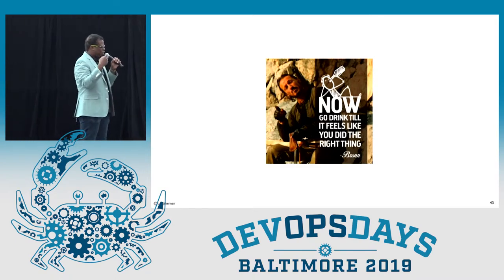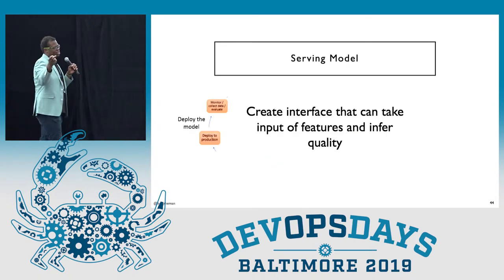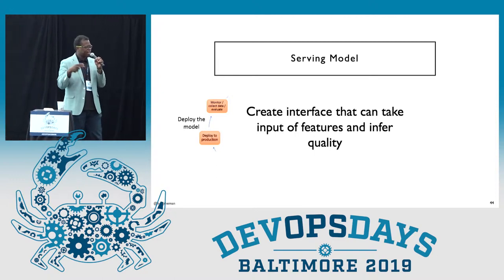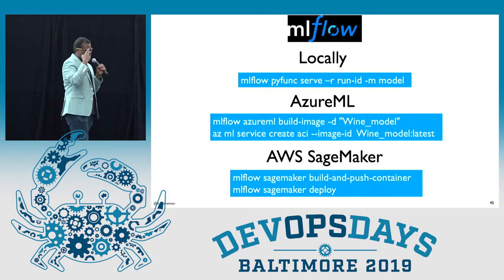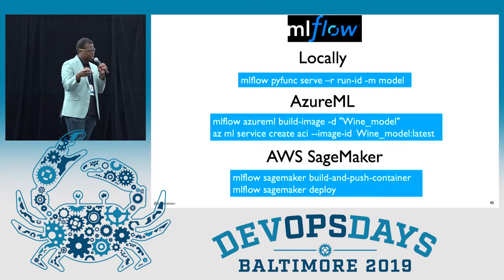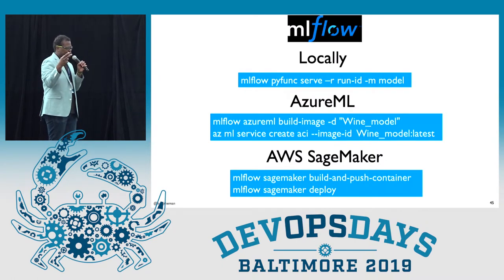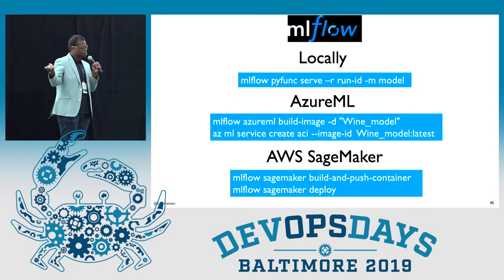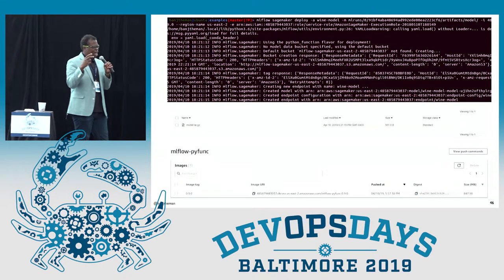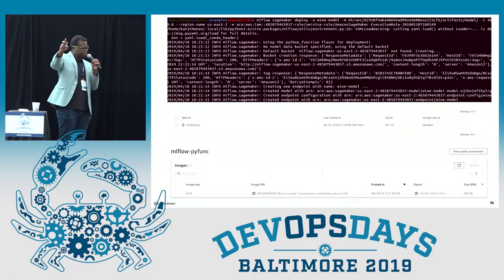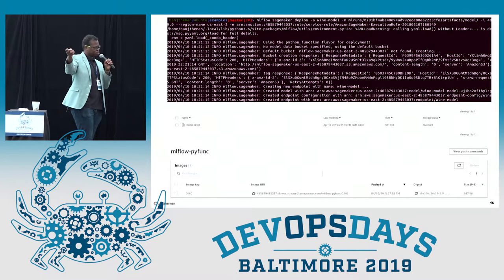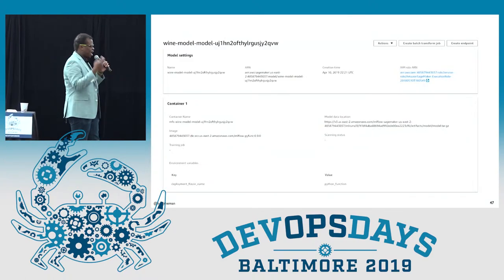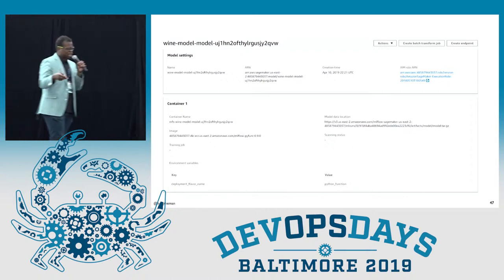Now that we know everything about our data and we think it's good, let's put it in production. The last step of the pipeline is serving the model — we want to create an interface that can take the input of features and infer the quality of the wine. MLflow has three ways to deploy: a local way that sets up a Flask server and an endpoint you can throw things at, and it can also build a container and push that to Azure ML as well as AWS SageMaker. When running through SageMaker, it puts the trained model into an S3 bucket, puts the container in an elastic container registry, and then creates an endpoint that hits that Docker container so you can send curl commands to get back results.